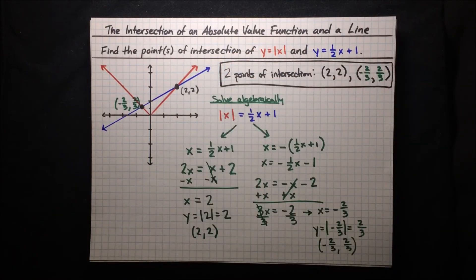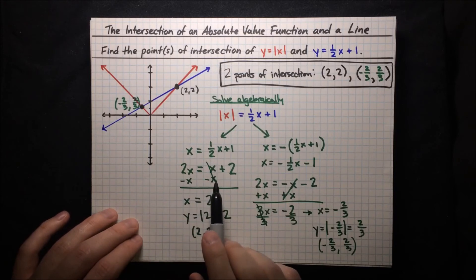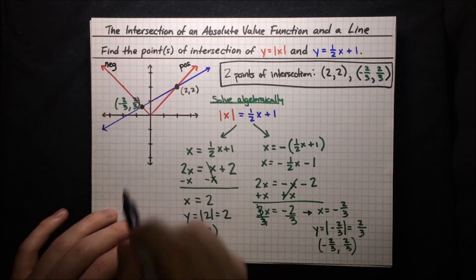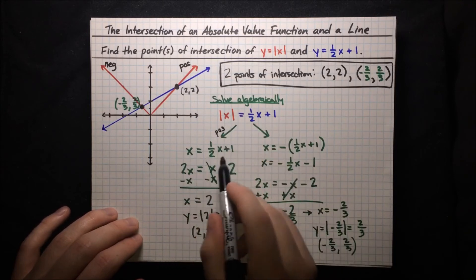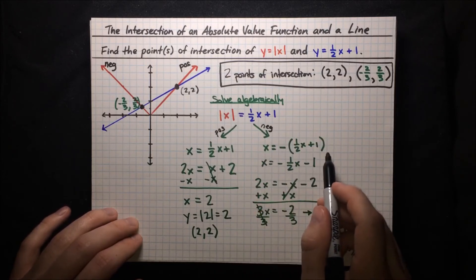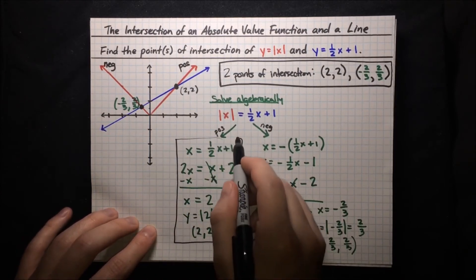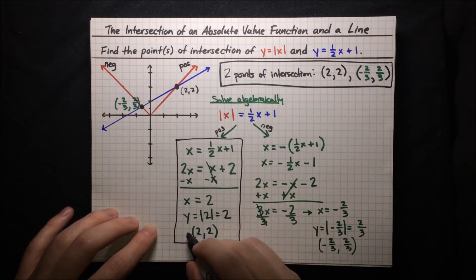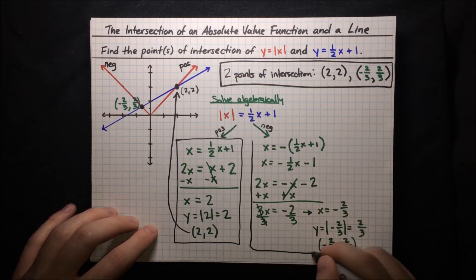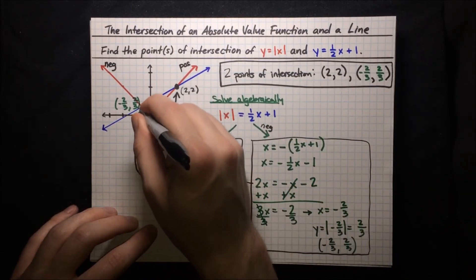One neat thing to notice is that the two equations actually correspond to the branches of the absolute value curve. There is a positive branch and a negative branch. The positive equation — where we took the positive of the right-hand side — gives the point of intersection of the line with the positive branch. Likewise, the negative equation gives the point of intersection of the line with the negative branch of the absolute value function.